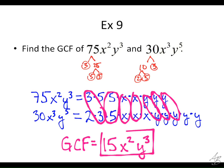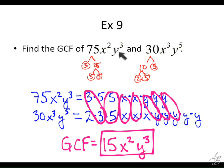Now, the shortcut for the variables: look at the x's — there are two x's here and three x's here. The smaller is two, so it's x squared. There are three y's here and five y's here — the smaller is three, so it's y to the third power. The shortcut with variables is we look for the one with the smallest exponent, and that's the one we use. So our GCF is 15x²y³.